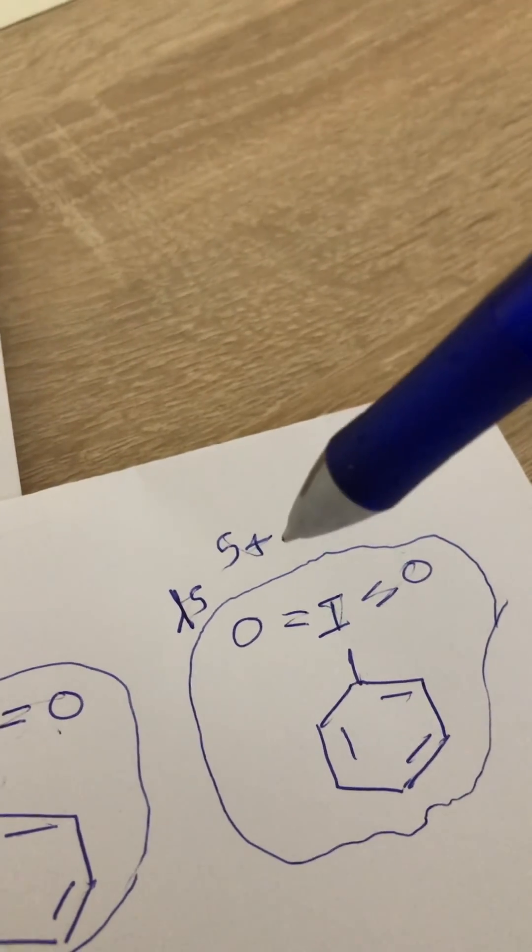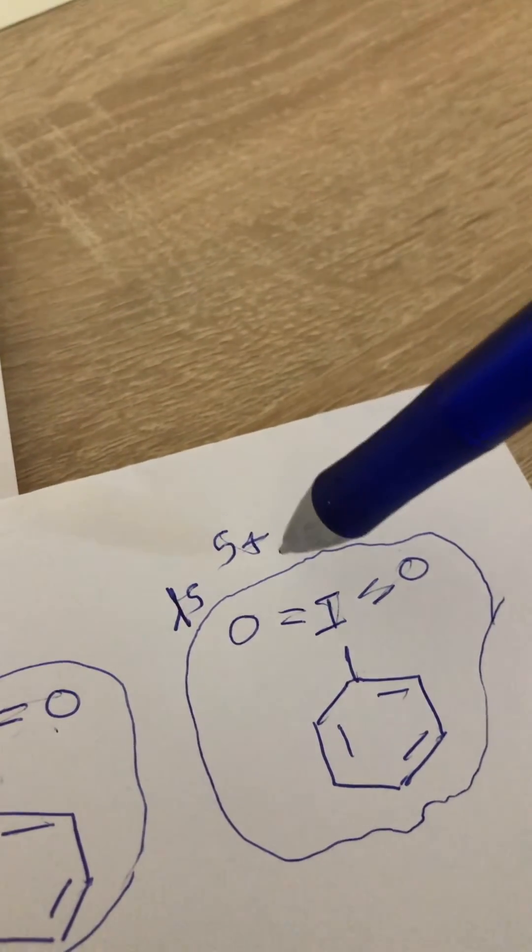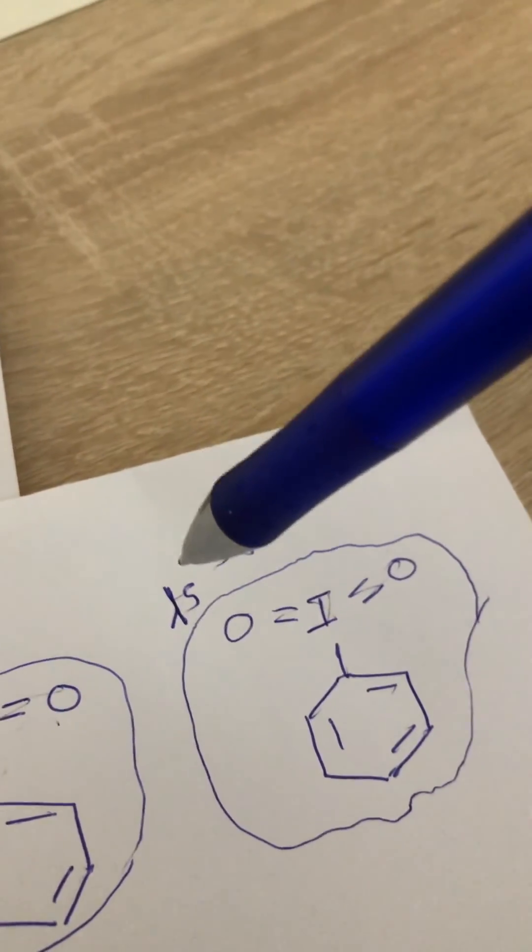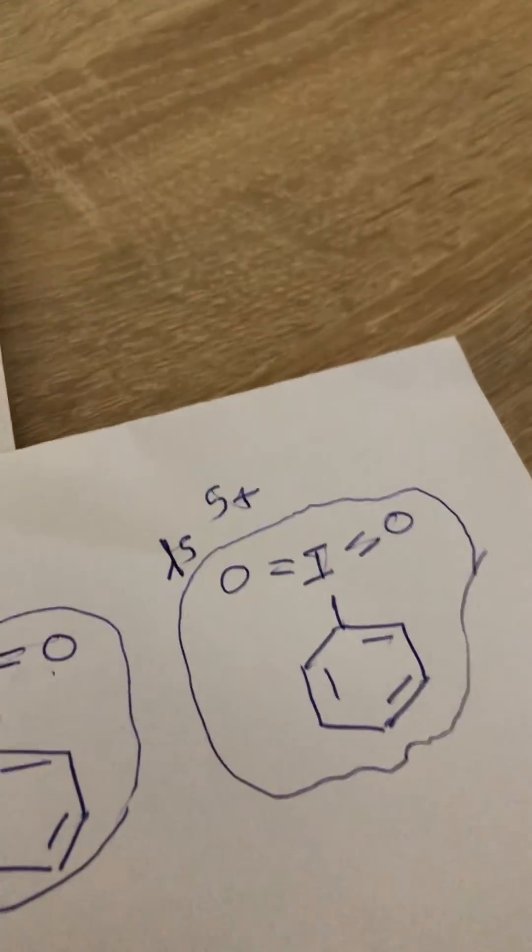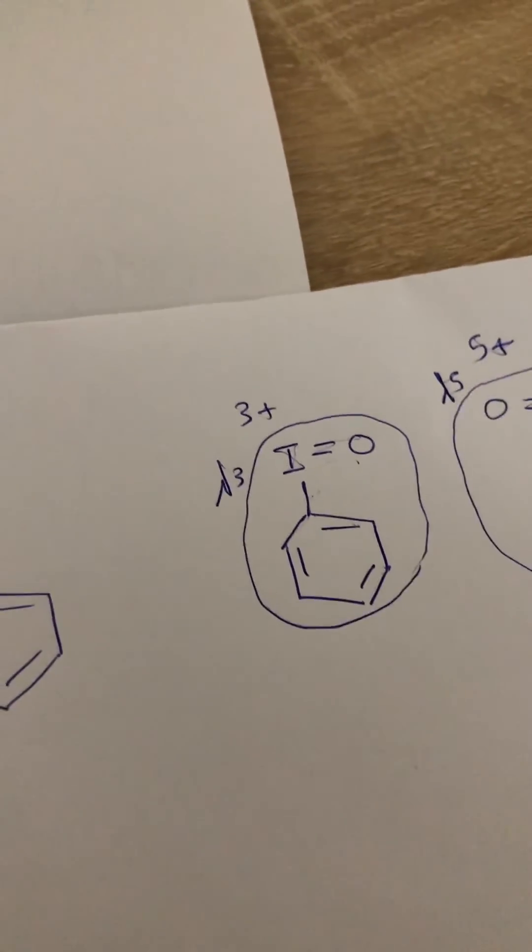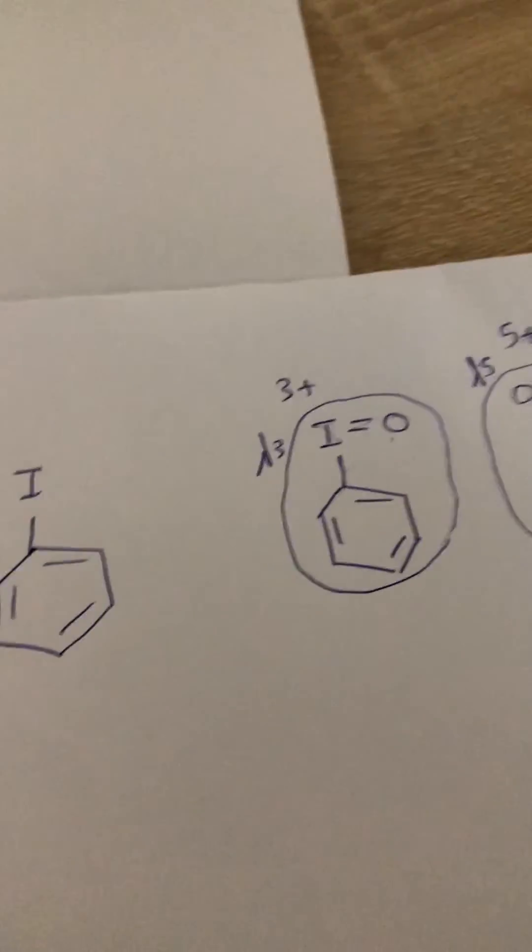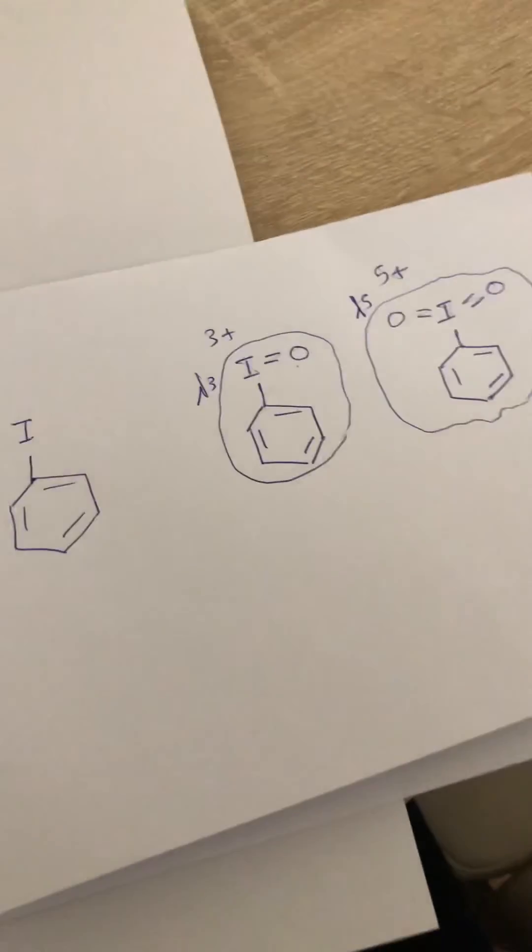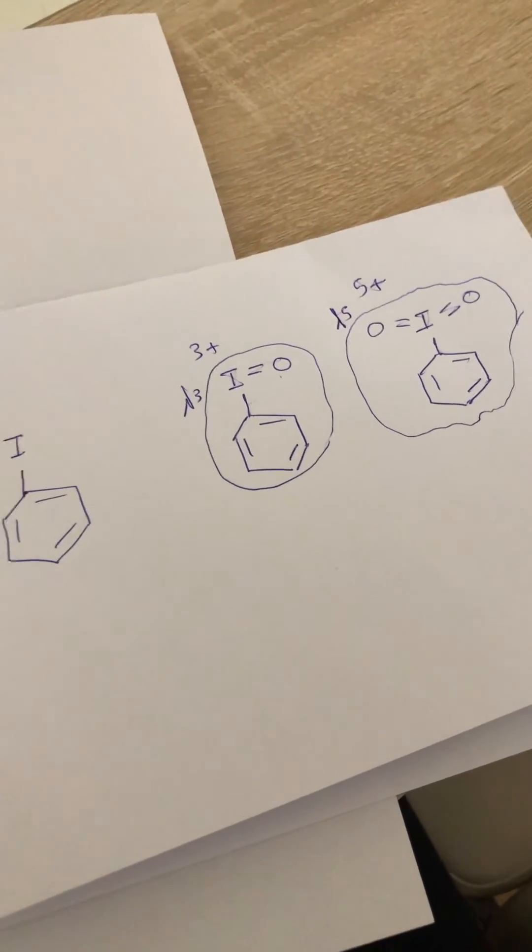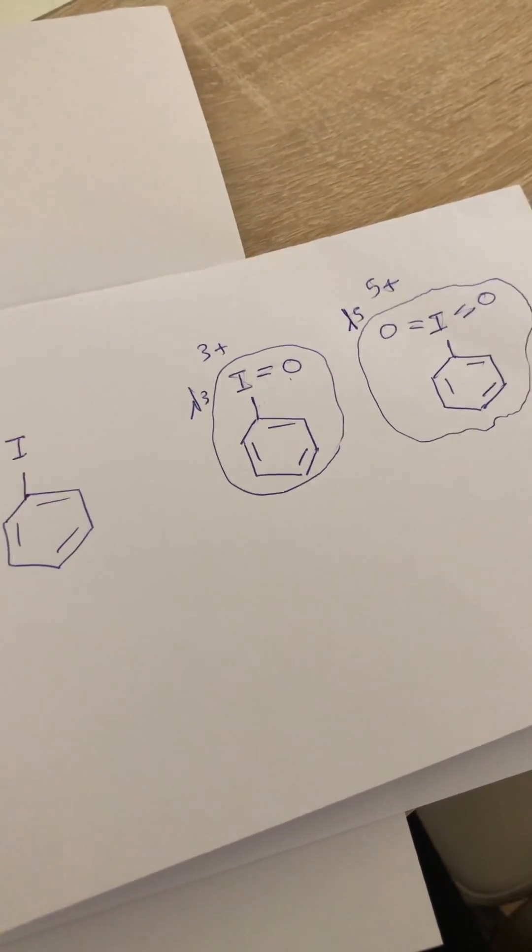And the oxidative state of this iodine is plus five, and the IUPAC called this compound lambda 5. Many examples about hypervalent iodines are reported in the articles, but these examples are the most simple to explain this term. Thank you.